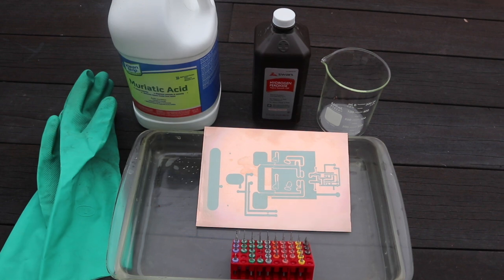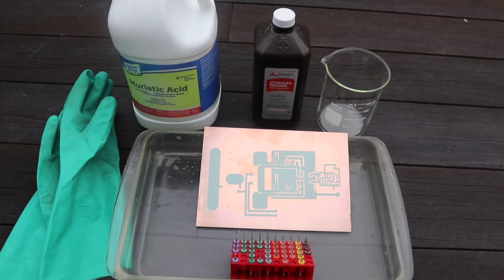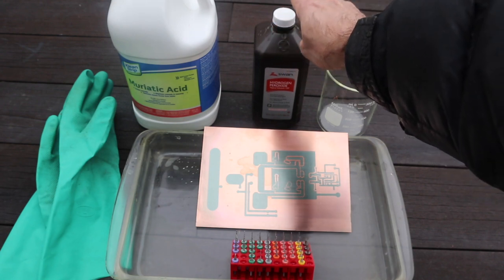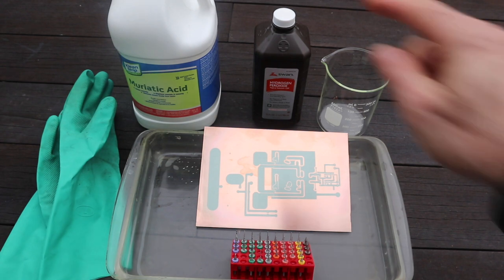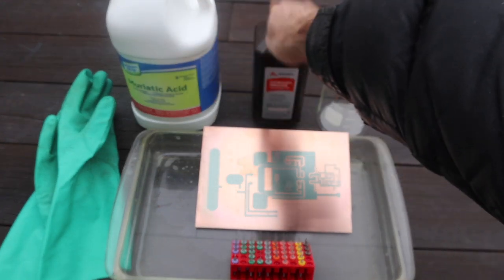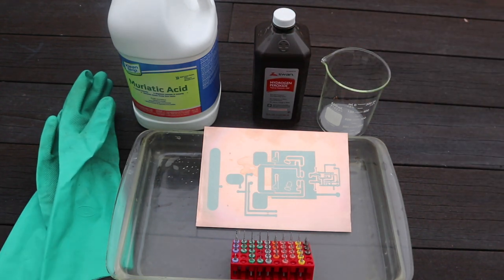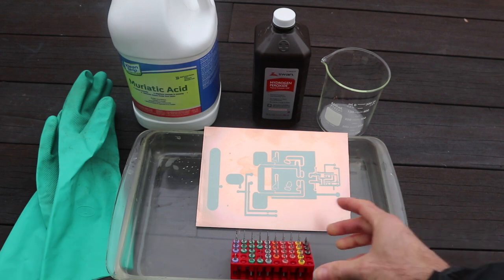You're going to need muriatic acid which is hydrochloric acid. I have 3% hydrogen peroxide although I am going to experiment with higher concentrations like 12%. For now, I've seen a 1 to 2 part ratio. I've had better luck with 1 to 3. So 100 milliliters of muriatic acid, 300 milliliters of hydrogen peroxide. You must have gloves. Hydrochloric acid will dissolve your skin. It will destroy your lungs. You have to do this outside in a well ventilated place. Muriatic acid is extremely dangerous. Be very careful with it.